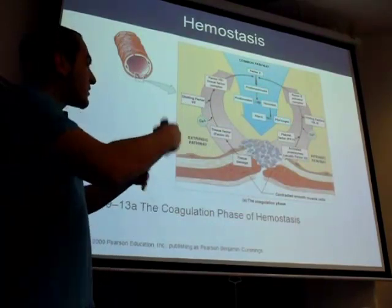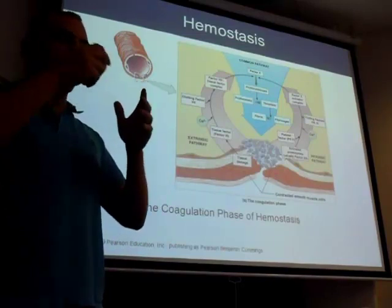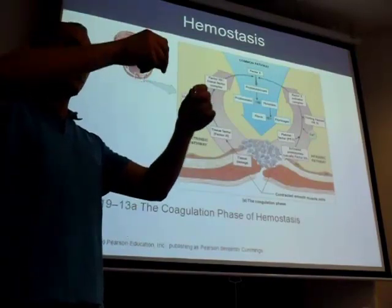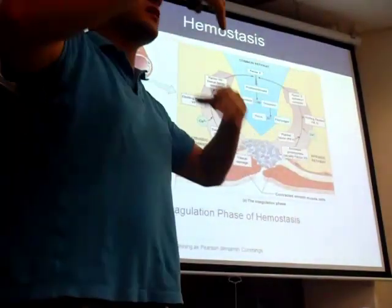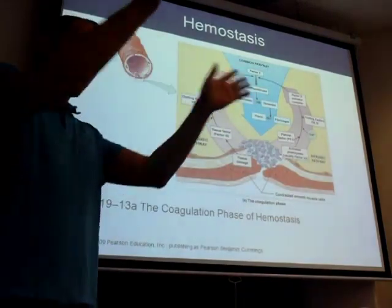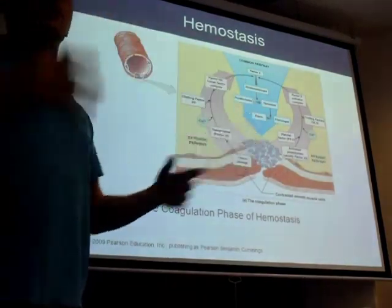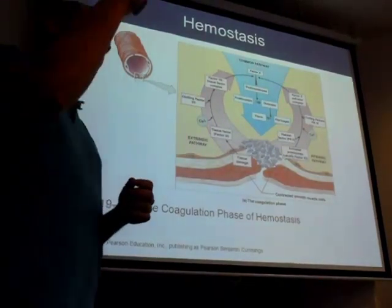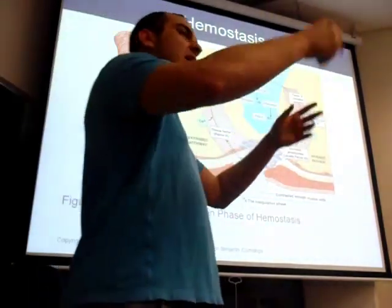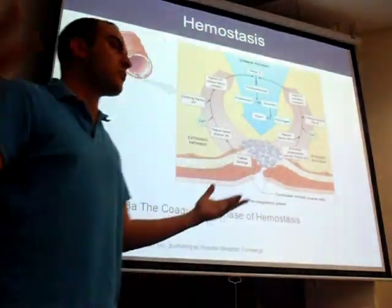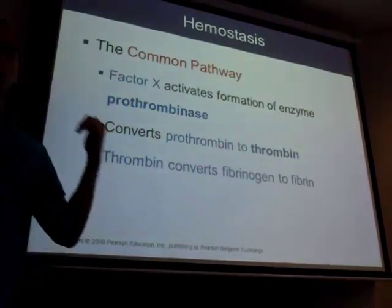Why is there a cascade rather than one step? Because it's like dominoes in a pyramid — one hits two, those two hit two more. You activate a lot of things rapidly. The cascade amplifies the signal: instead of going from one to one, you're hitting multiple things. It spreads much quicker, giving you a quicker clotting process.